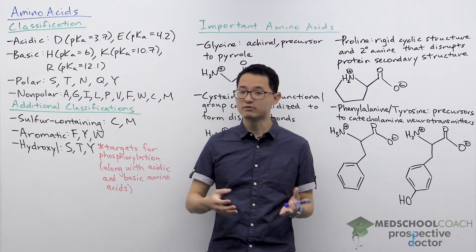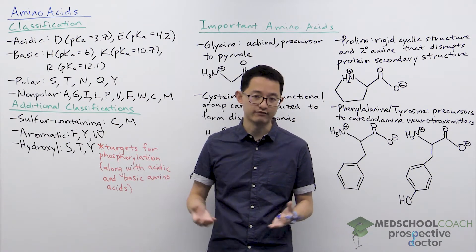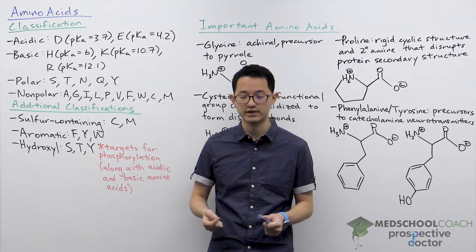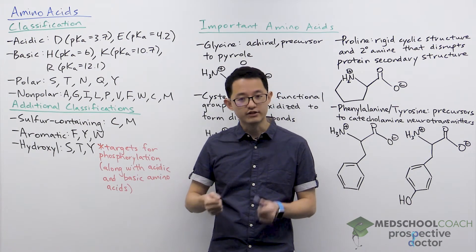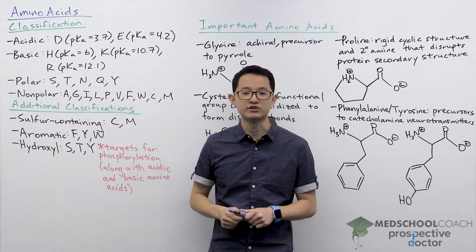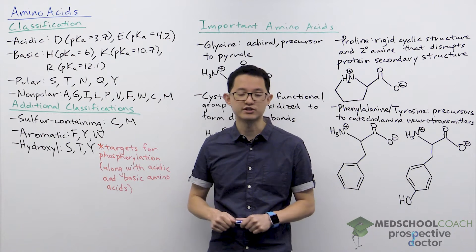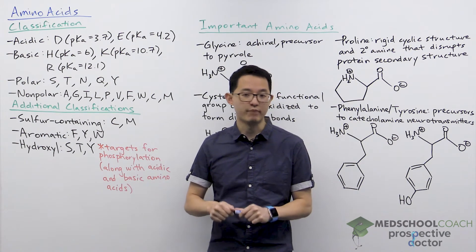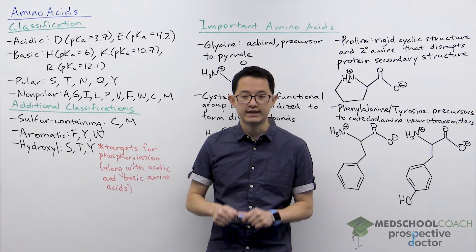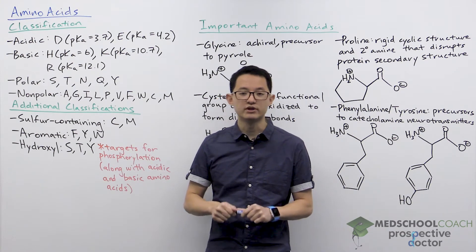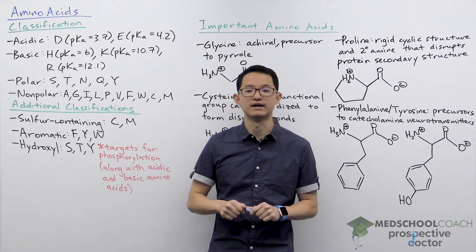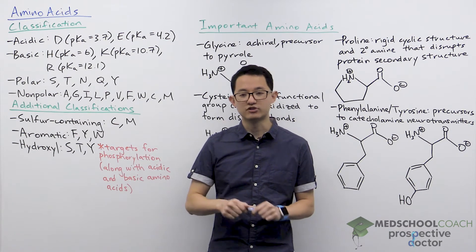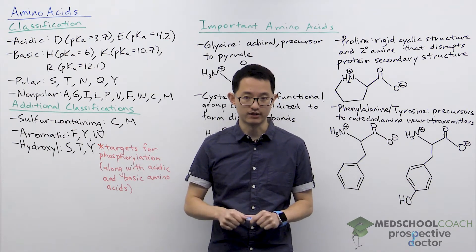The MCAT is a multiple-choice test — you never have to draw out any structures for any questions. However, there are a number of situations where the passage or a question will introduce the structure of an amino acid or peptide, and to answer the questions you're going to have to be able to recognize the structures by side chain to determine which amino acids they are.